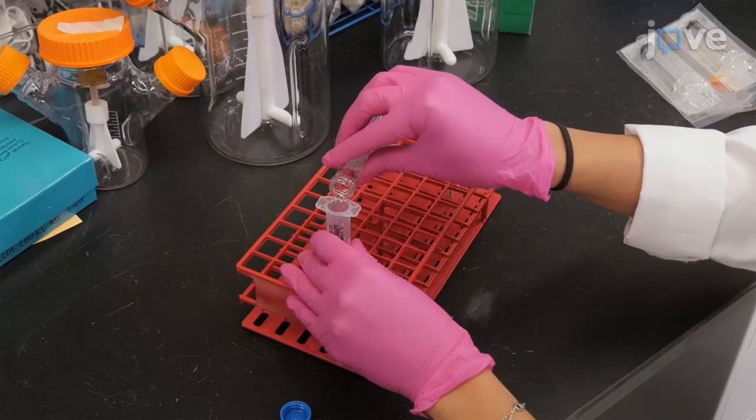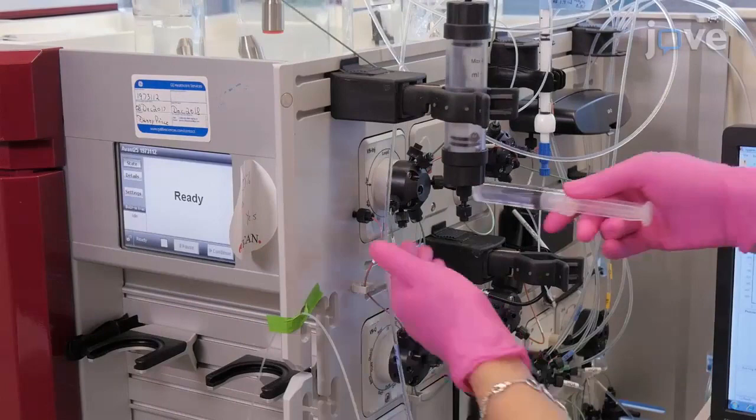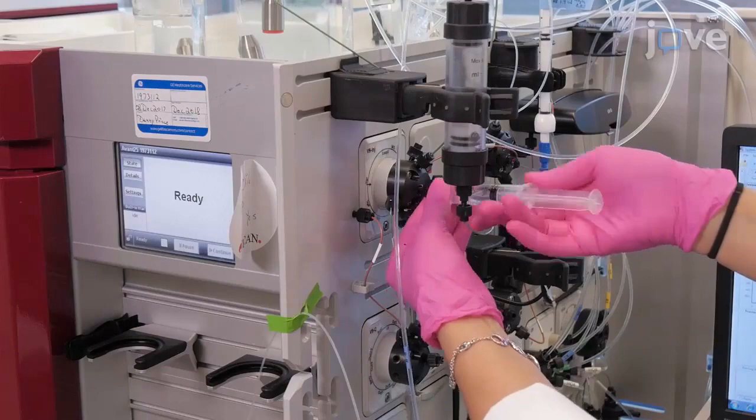Next, add 0.22 µm pore filtered harvested cell culture fluid to an empty 12 mL syringe with a capped nozzle. After removing the cap, insert the syringe nozzle into the manual injection port of the purification system. Twist the syringe to tighten it in place and depress the plunger until the entire volume of the sample has been injected and is visible in the attached 10 mL large volume sample loop.